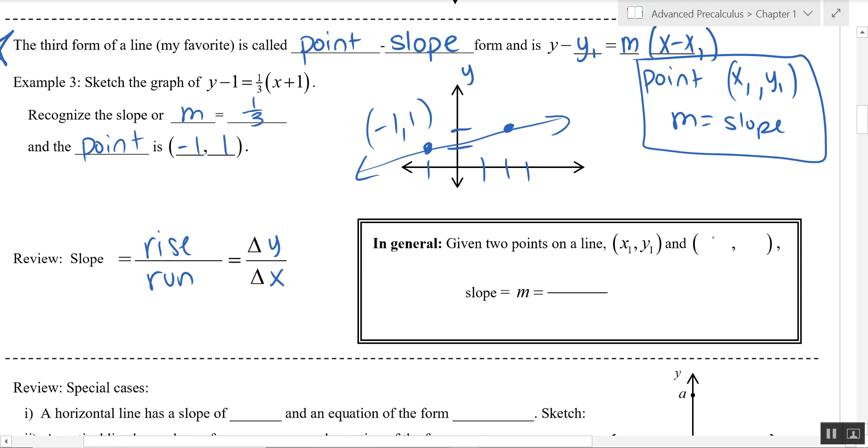And given two points on a line, x sub 1 y sub 1 and x sub 2 y sub 2, the slope is simply the difference in your y coordinates or the rise over the difference in your x coordinates or the run.